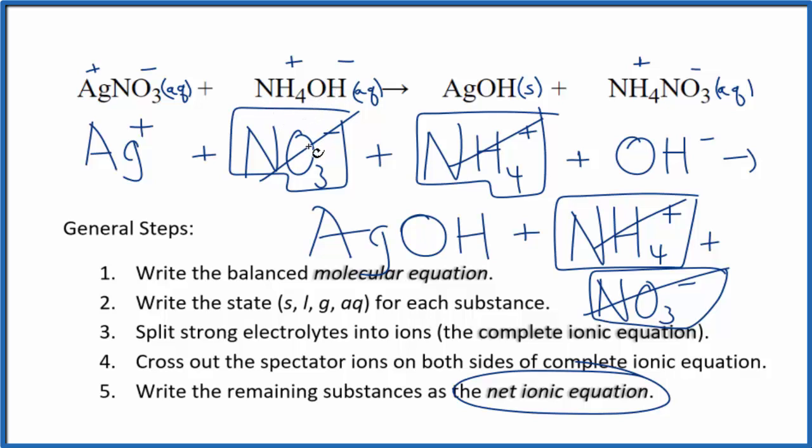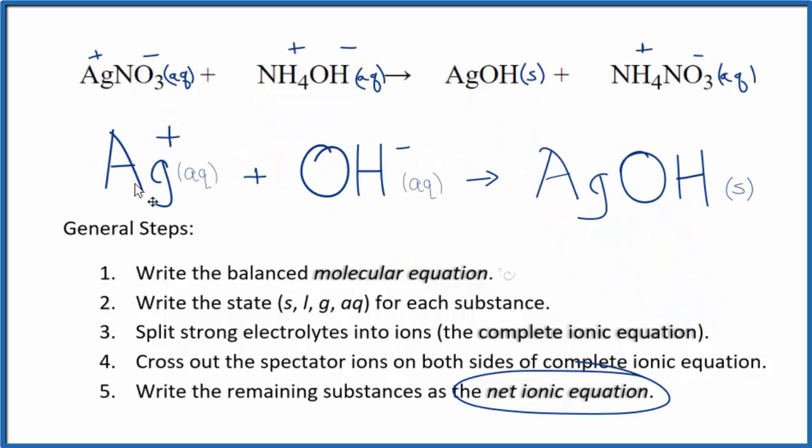Let me clean this up and write the states. This is the balanced net ionic equation for AgNO3 plus NH4OH, silver nitrate plus ammonium hydroxide. Charges are conserved. We have a plus and a minus that gives us a net charge of zero in the reactants. In the products this is a neutral compound, net charge of zero. If you count the atoms up they're balanced too. Thanks for watching.